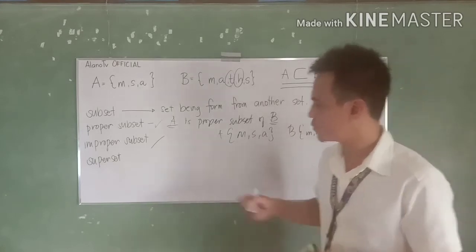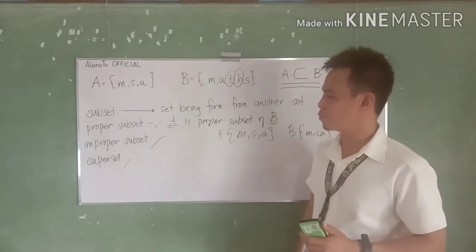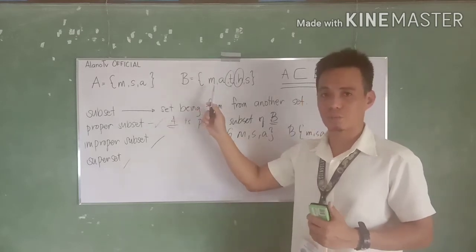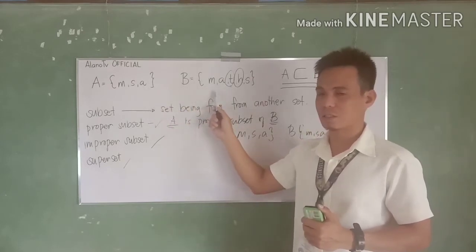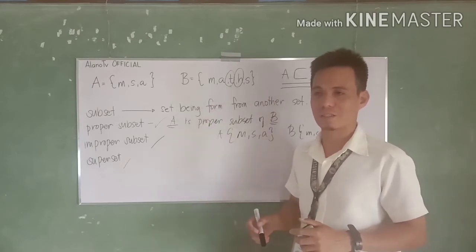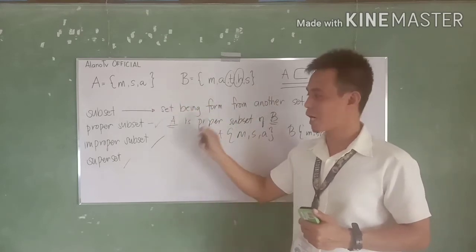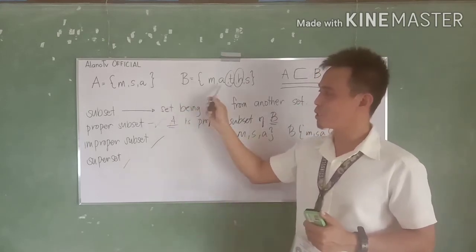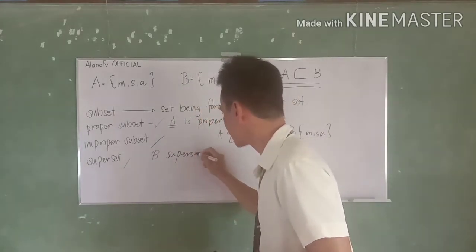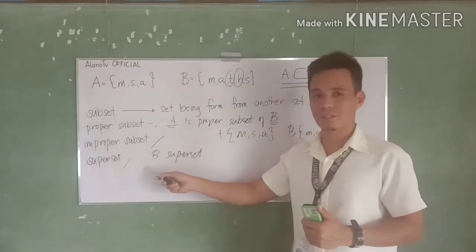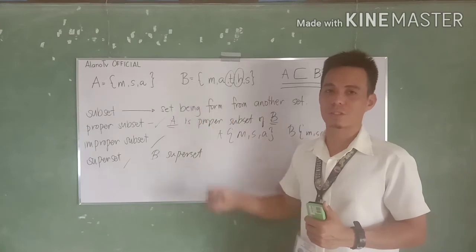Lastly is the superset. Sa superset naman, look at our given set. Set A came from set B. Since yung A galing lang sa set B, yung set B is what we call the superset. Kung saan ang galing yung mga subsets, doon tinatawag na superset. So therefore, in this case, set B is the superset — because yung element ng subset galing lang sa kanya.